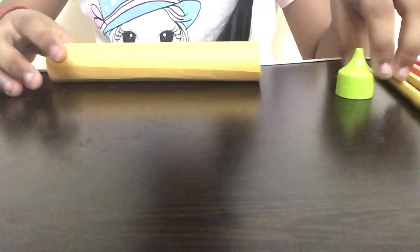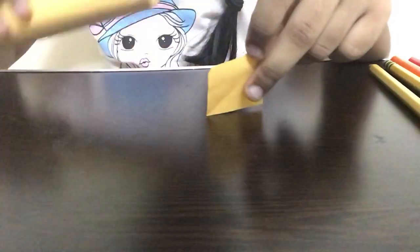After we are done with this, I'm taking a small square like this of the same color as the rolled part, and I'm applying some glue on this cylinder.